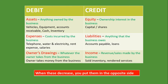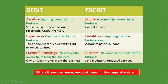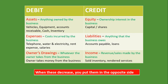Another thing to remember is that when these items decrease, you put them on the opposite side. For example, if you buy vehicles you put them on the debit side, but when you sell the vehicle, you put vehicles on the credit side. Similarly, if your liabilities are increasing — say you take on a loan from the bank — you put it on the credit side, but when you pay back that loan, you put it on the debit side. All these accounts decrease on the opposite side.